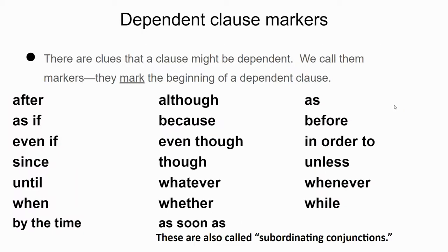Now, these are some clues that might be called dependent clause markers — they mark the beginning of a dependent clause. Some of these also mark the beginning of prepositional phrases, so you have to look after them: is there a subject and a predicate that go with this? A lot of these are words you see often, and they can create fragments because people will start a sentence with 'because' or 'after' but won't finish the sentence. For example, 'after we go to the game' — what about it? So look at these familiar markers and ask yourself: is there a subject? Is there a predicate?